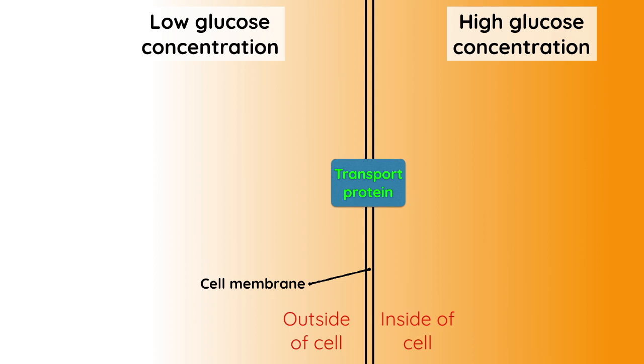Embedded in that membrane is something called a transport protein. Transport proteins are involved in controlling what enters and leaves a cell. Here's what happens: the glucose molecule will meet up with the transport protein, but it can't do anything yet because it doesn't have the energy to send the glucose molecule against its concentration gradient.